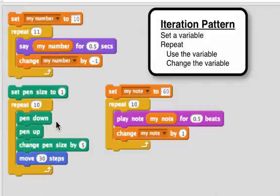So this has all of the pieces of the iteration pattern. We set a variable, we have a repeat, we change that variable, and here with the pen down, we use that variable.